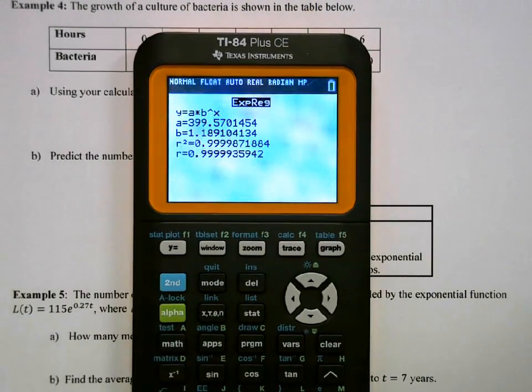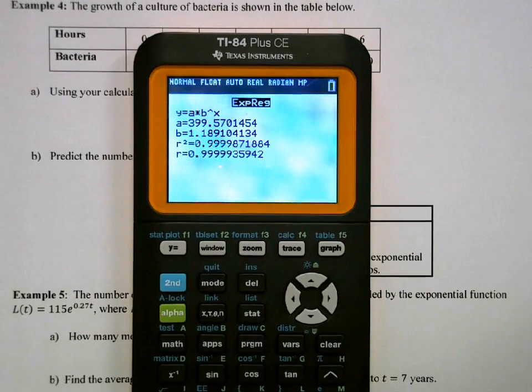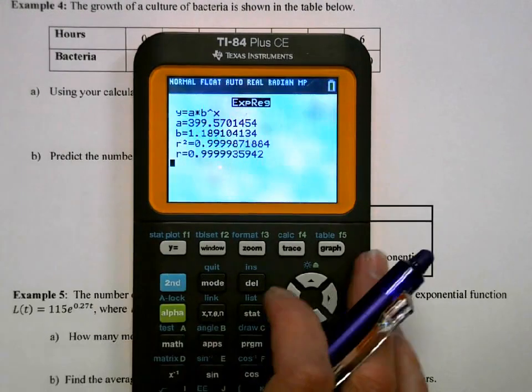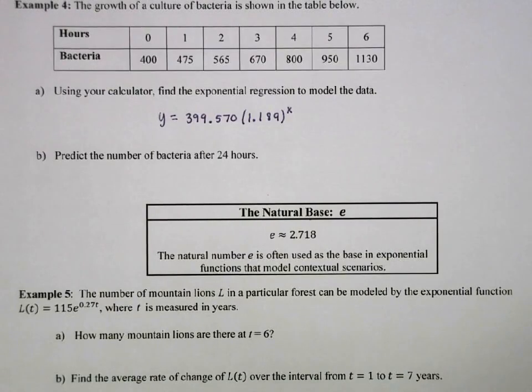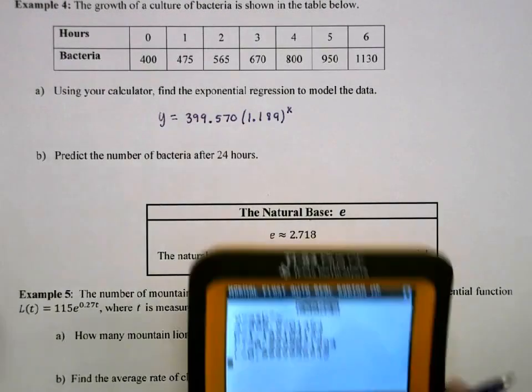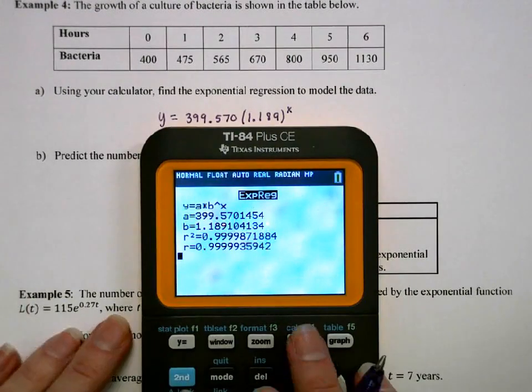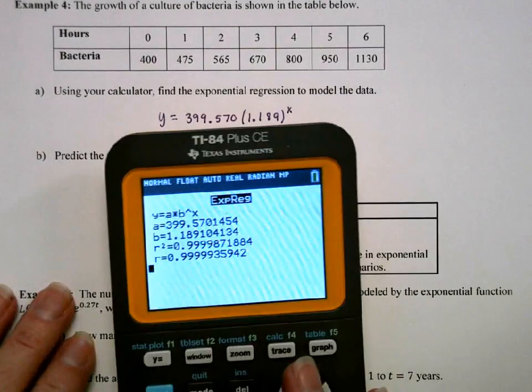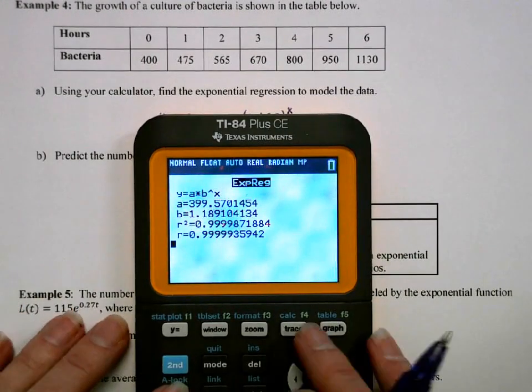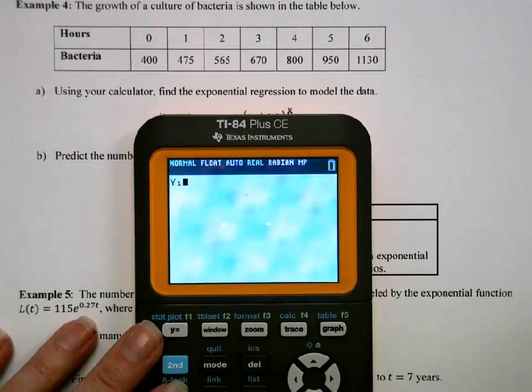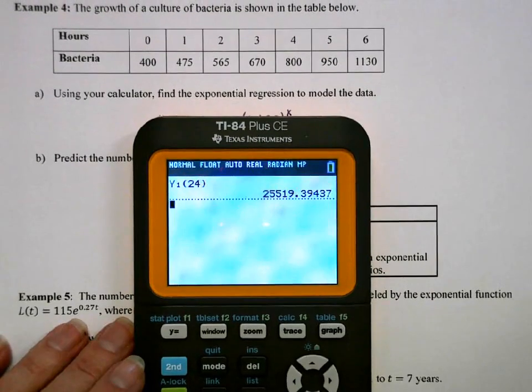So again, I'm going to take those values and plug them in. Filled in with the correct values from the calculator, we get 399.570 times 1.18 to the x. Then I want to evaluate at 24 to see how many bacteria there are after 24 hours. So we'll do y1, evaluate it at 24, gives us 25,519.